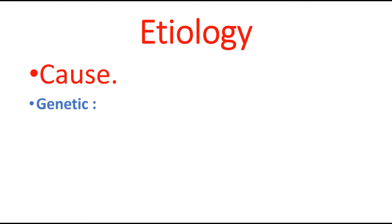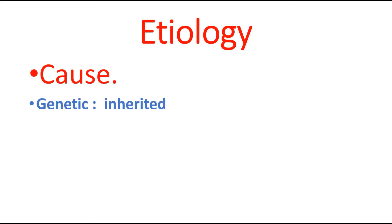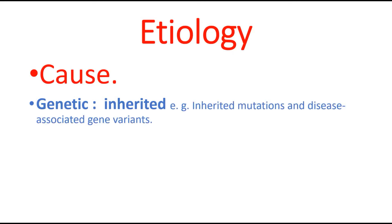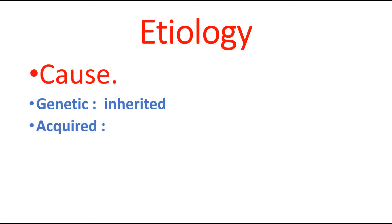Let's start with etiology — the cause of the disease. The cause may be genetic or acquired. Genetic means inherited diseases, for example inherited mutations and disease-associated gene variants. You are going to study a whole chapter of genetic diseases.